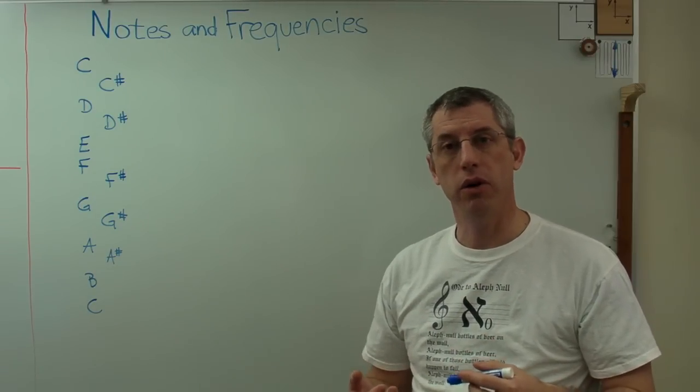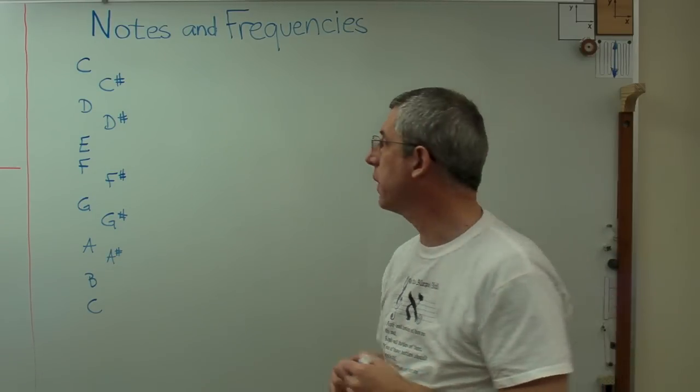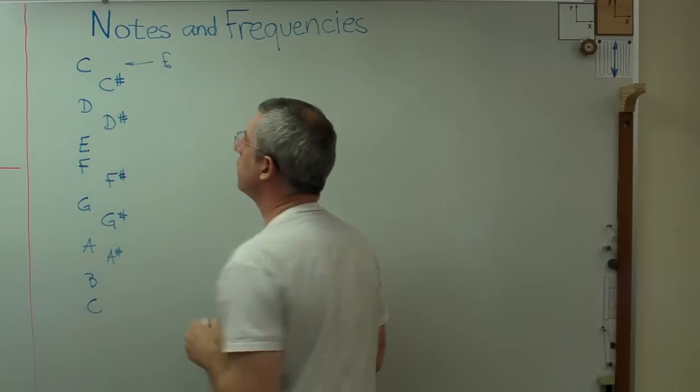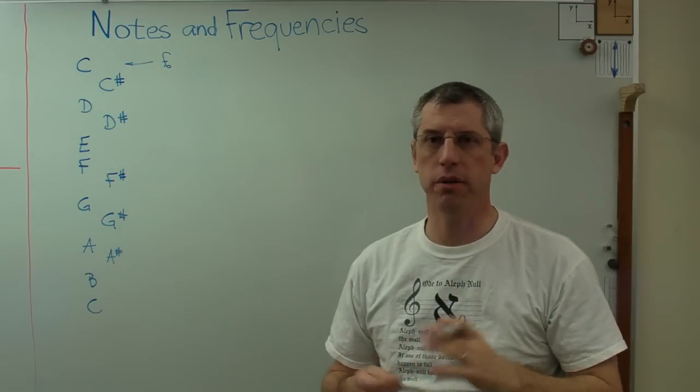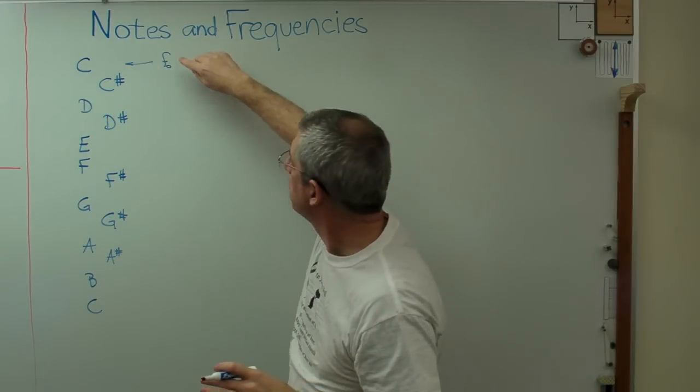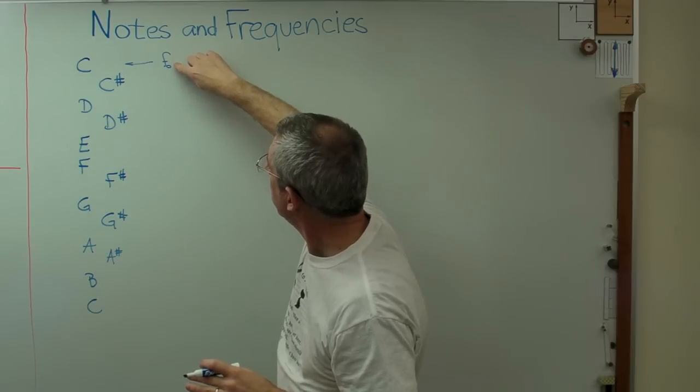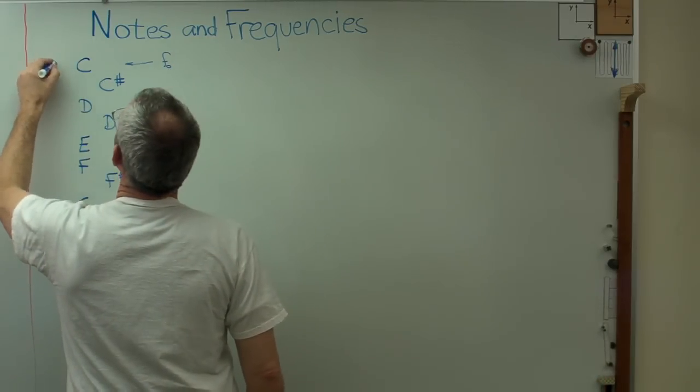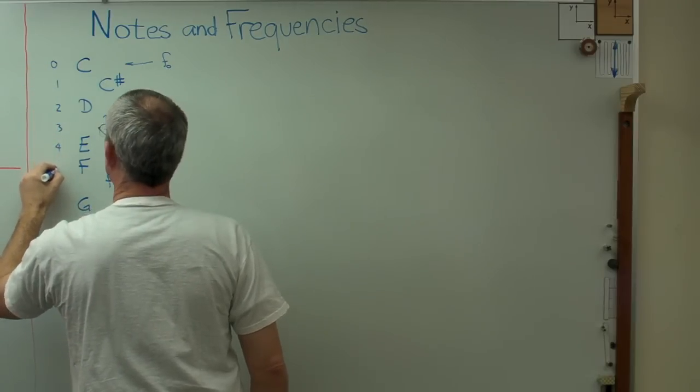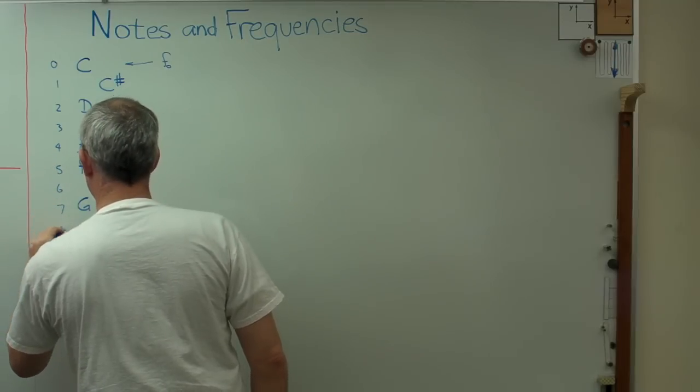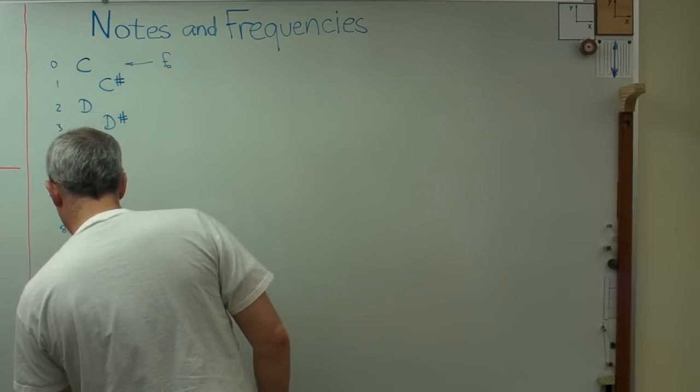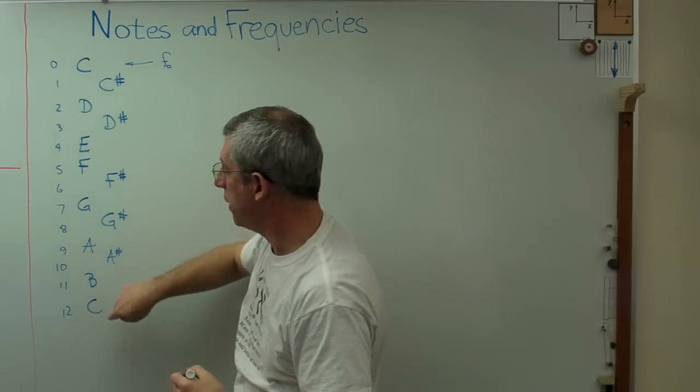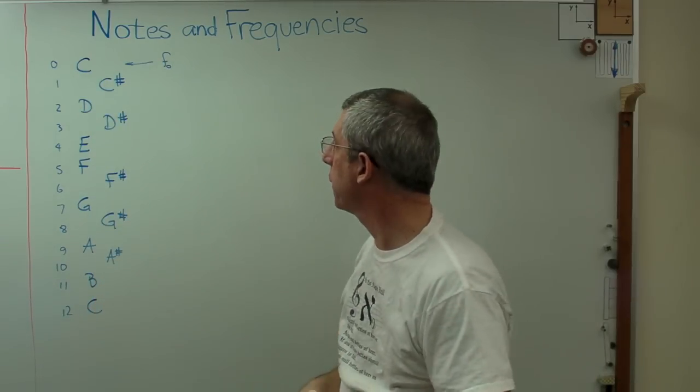Music is defined in terms of frequency ratios. So let's say we knew the frequency of that note right there. We'll just call it F0. I don't know what it is. It doesn't matter what it is. We'll find out later. But for the sake of figuring out the pattern, we'll just call that F0. So this note here, we'll call that the zero note 1, 2, 3, 4, 5, 6, 7, 8, 9, 10, 11, 12. There's 12 possible notes between C and the next C. The pitch is increasing on the way down here.